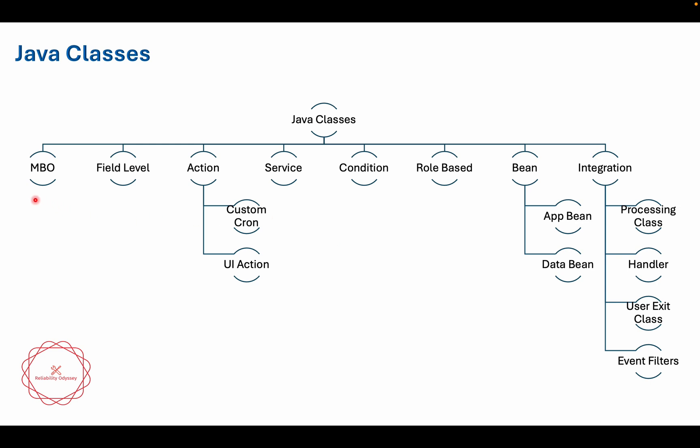The first basic type is the MBO class, or the object-level class. This class is responsible for fetching data. Whenever you are going to save data, create a new record, and click the save button, at that point MBO classes are involved. These classes are also responsible for fetching data from the database.